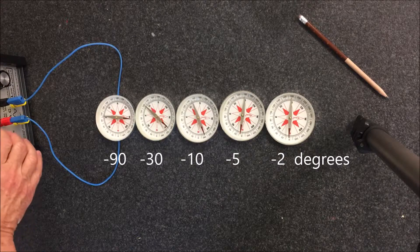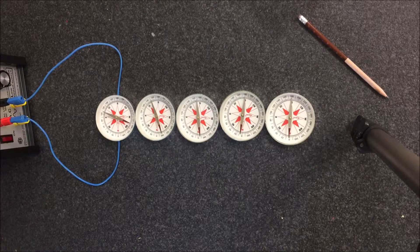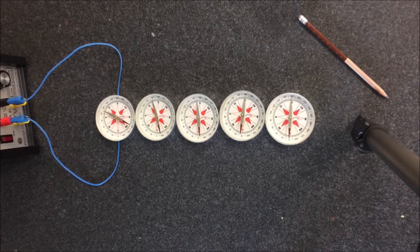Now, I could also repeat this using an ammeter in the circuit, and you could compare the current versus the amount of deflection.